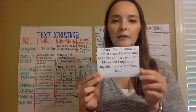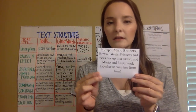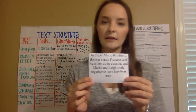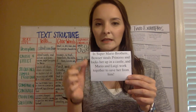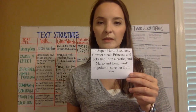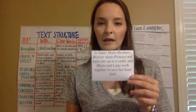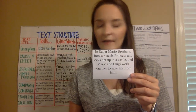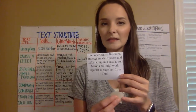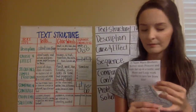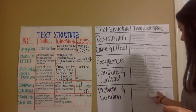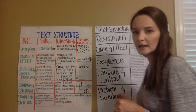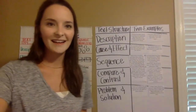Final card: In Super Mario Brothers, Bowser steals the Princess and locks her up in a castle, and Mario and Luigi work together to save her. The problem is Bowser locks the princess in a castle, and Mario and Luigi have to figure out how to save her — so this text structure is problem and solution. We've now reviewed all our text structures and completed the text structure sort. Nice job!